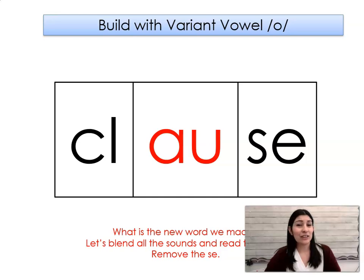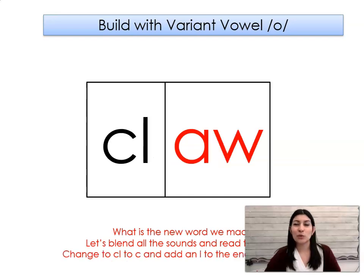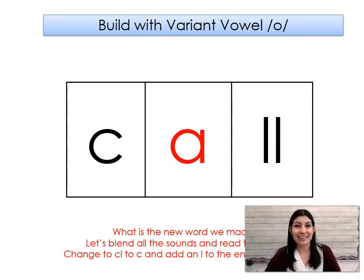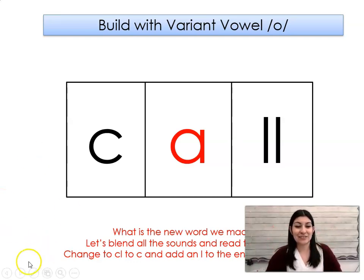Let's take out the S. What word did we make? Claw. Let's change the CL to K and add an L to the end. What word did we make? Call. Very good. Give yourselves a silent cheer.